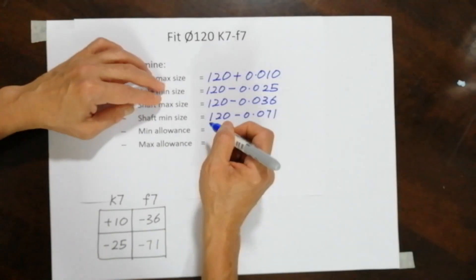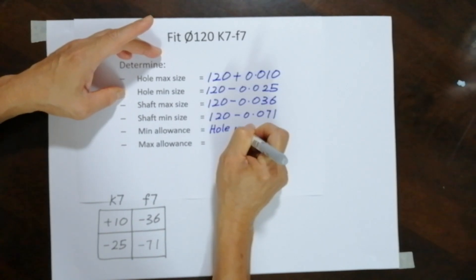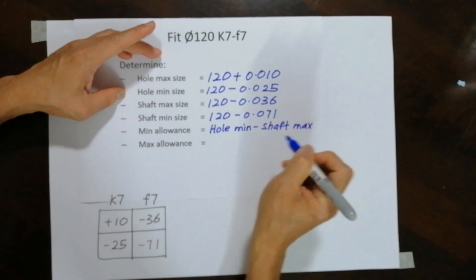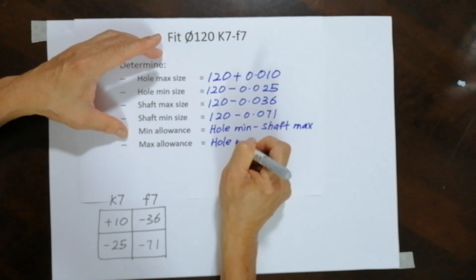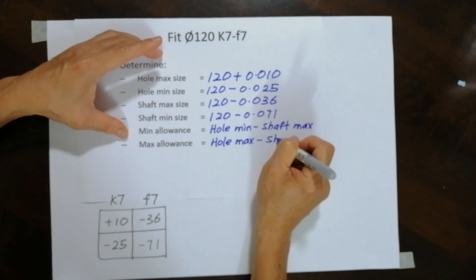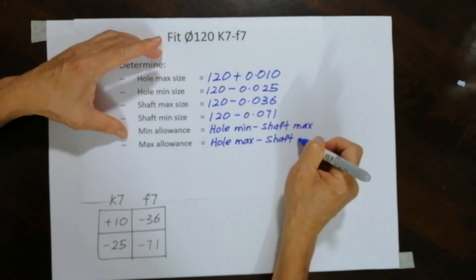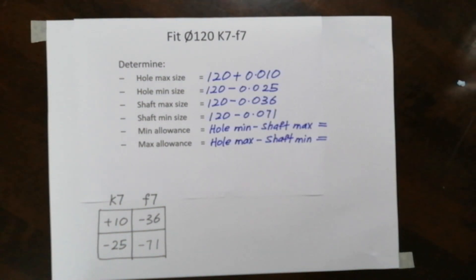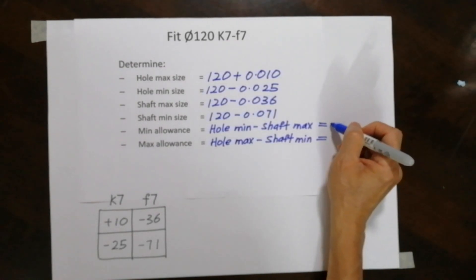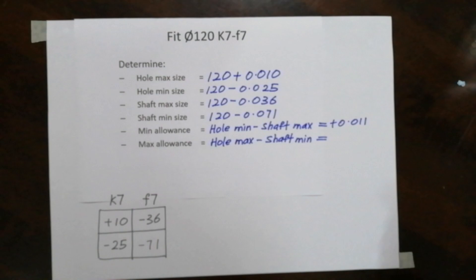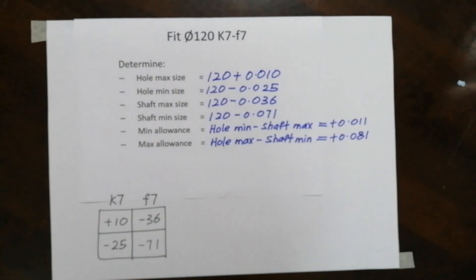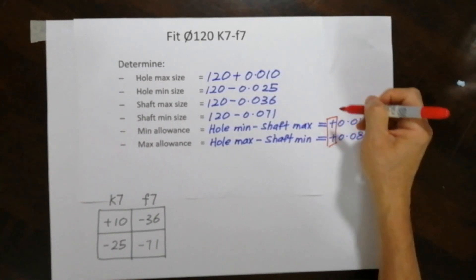Now for minimum allowance, it is the hole minimum minus shaft maximum. And for maximum allowance, it is hole maximum minus shaft minimum. The values I get are plus 0.011 and plus 0.081. In other words, this is again similar to the earlier example — this is a clearance fit.